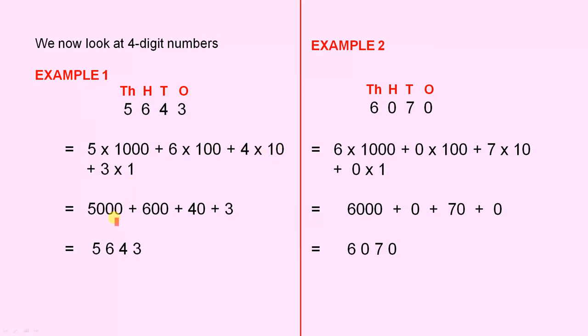So that's 5,000 plus 600, plus 40, plus 3, which is 5,643. The next example,